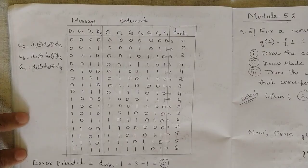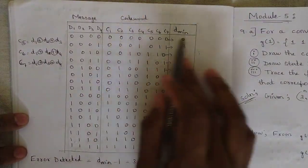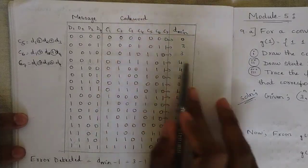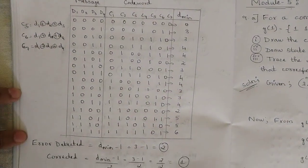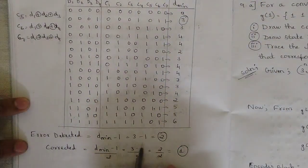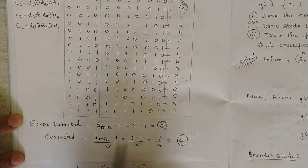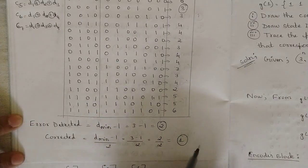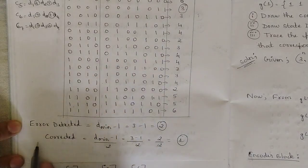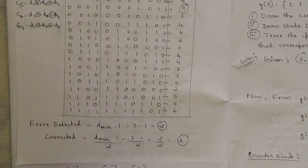To find error detecting and correcting capabilities, calculate the minimum Hamming weight (dmin) across all non-zero code words. The minimum number of 1s found is 3, so dmin=3. Error detection capability = dmin − 1 = 2, meaning 2-bit errors can be detected. Error correction capability = floor((dmin−1)/2) = floor(2/2) = 1, meaning 1-bit errors can be corrected.